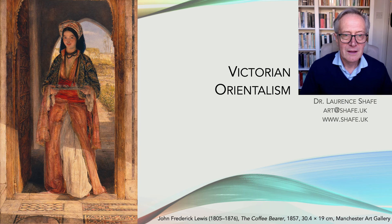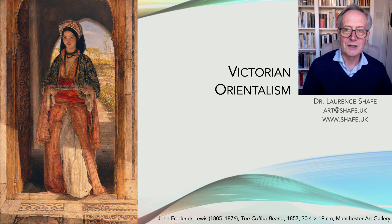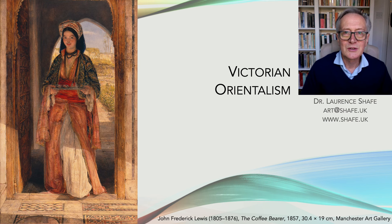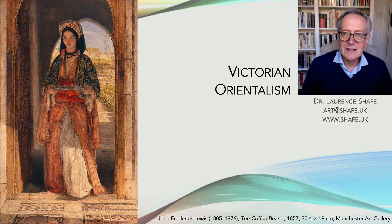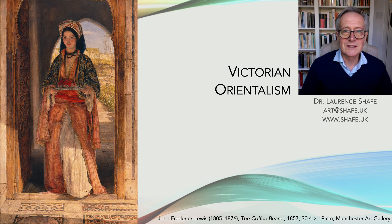Today's theme is Victorian Orientalism. This was a common and popular subject for Victorian painting. Like the medieval and classical subjects produced by artists, it provided a view of another world — but an imaginary view. It was a world constructed to satisfy the Victorians' expectations of the Orient. The models were often Western women; the scenes were set in the Middle East, often based on sketches the artist had made there, but they rarely reflected life there.